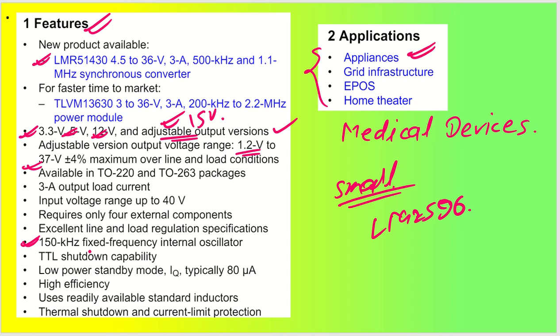Talking about applications: you can utilize this IC in appliances like fridges, washing machines, coolers, grid infrastructure, e-posts, home theatres, and sound boxes. It is also widely used in medical applications such as ECGs and defibrillators, where we need a very sturdy 5V regulator.